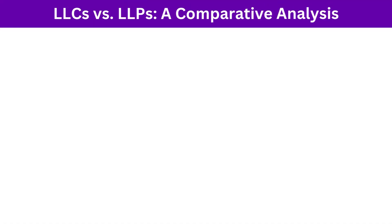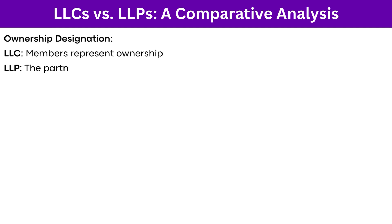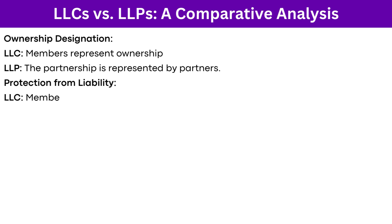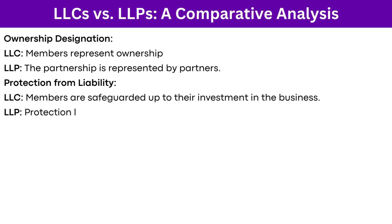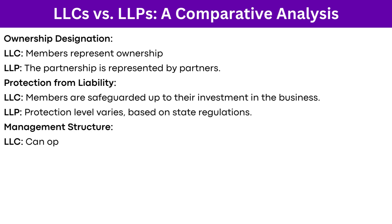LLC versus LLP: a comparative analysis. Features of an LLC include: ownership designation, where members represent ownership; protection from liability, where members are safeguarded up to their investment in the business; management structure, which can opt between member-managed or manager-managed setups; and tax implications, which include multiple options such as sole proprietorship and corporation.